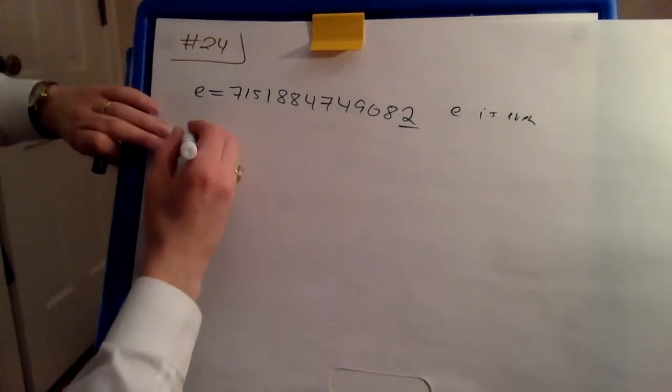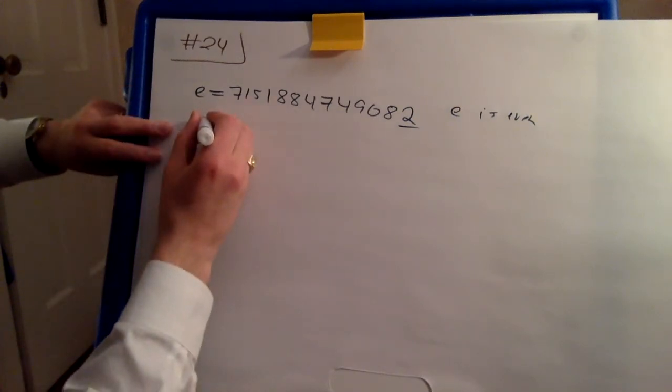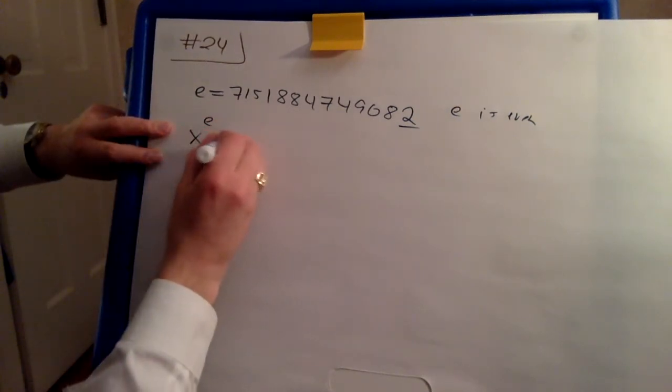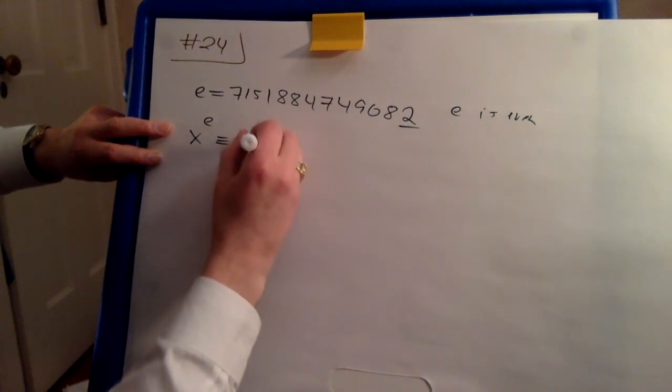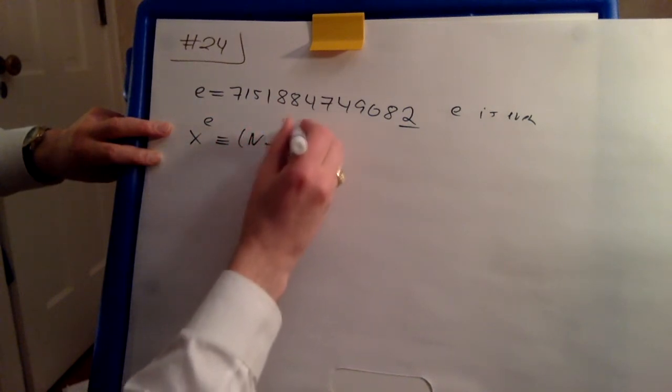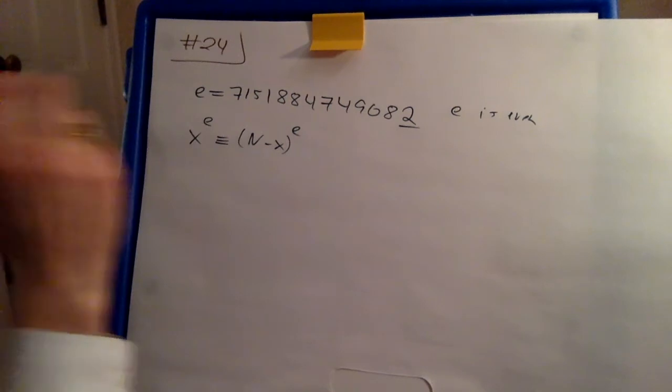So notice that if you encode x, this would be the same thing as encoding (n-x)^e mod n.